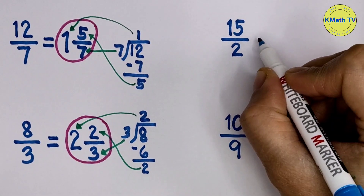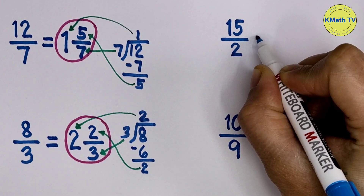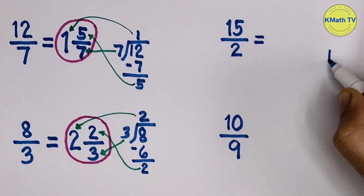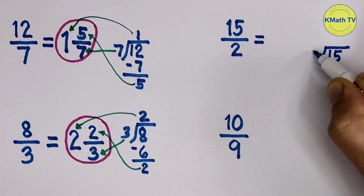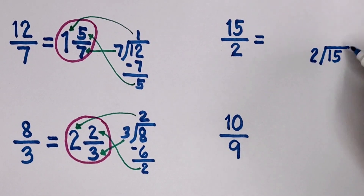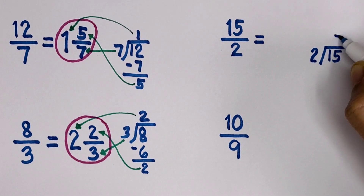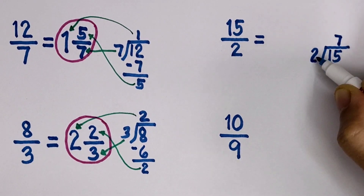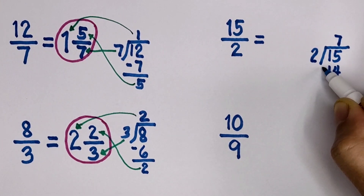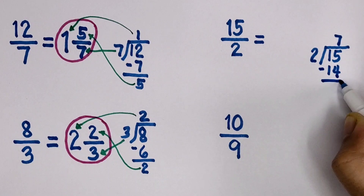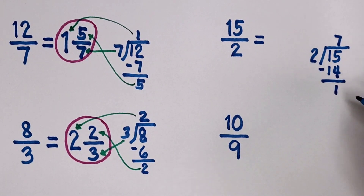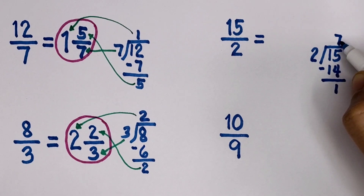Next, let's change 15 halves to a mixed fraction. Let's divide the numerator 15 by the denominator 2. 15 divided by 2 equals 7. 7 times 2 equals 14. Then subtract. 15 minus 14 equals 1. The remainder is 1 and the quotient is 7.